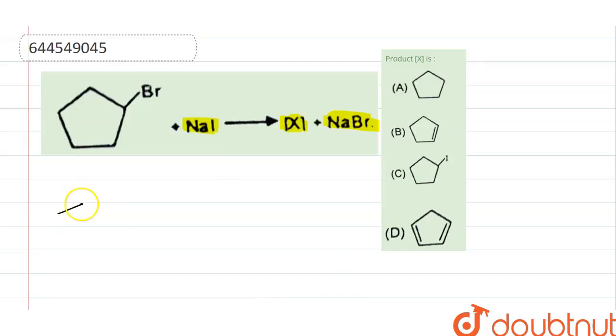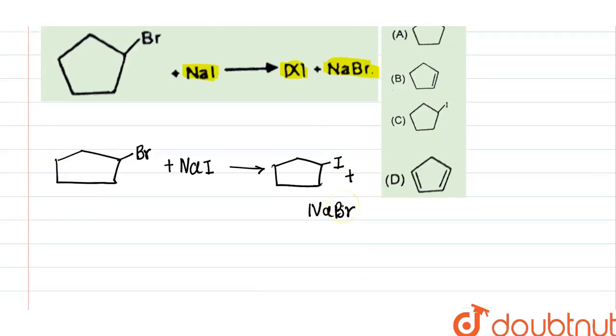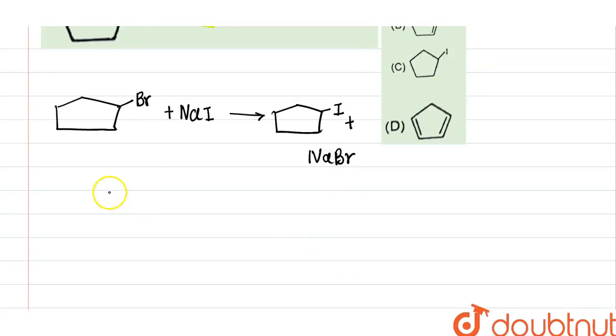When bromocyclopentane reacts with NaI, then formation of iodocyclopentane plus NaBr. So the name of the reaction is called as the Finkelstein reaction.